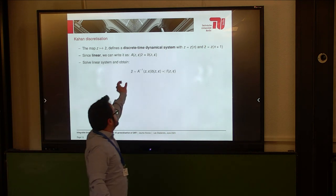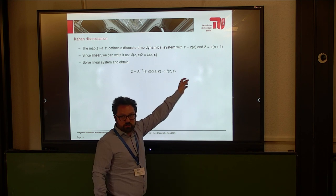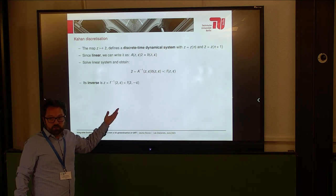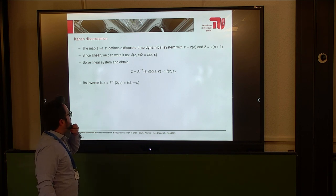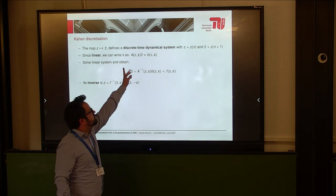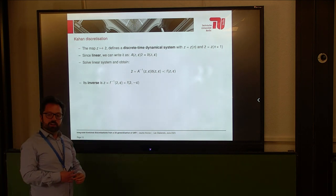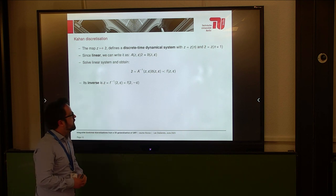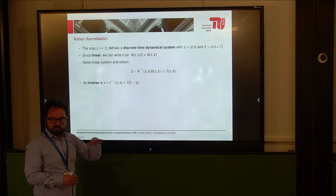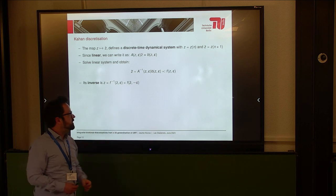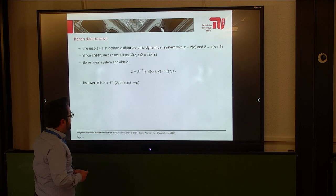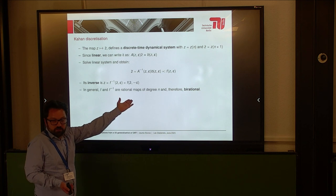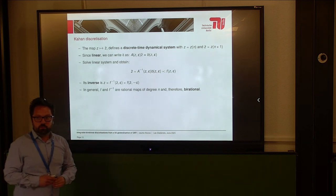I obtain a map that will be Z-tilde as a function of Z and epsilon. For free, I obtain its inverse. By Cramer's rule, these maps are determinantal maps — they can be expressed as quotients of determinants: polynomials divided by polynomials, always the same denominator. So it's a rational map with a rational inverse, just by changing one sign. This is what is called a birational map. Within the difficult realm of algebraic geometry, we know more about birational maps than about arbitrary rational maps.